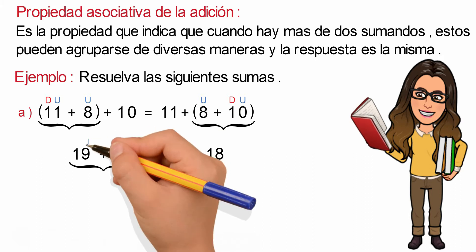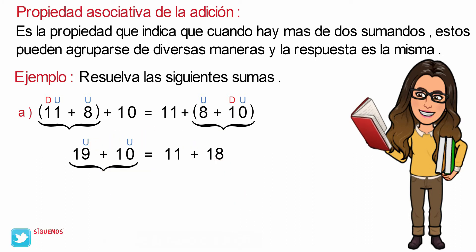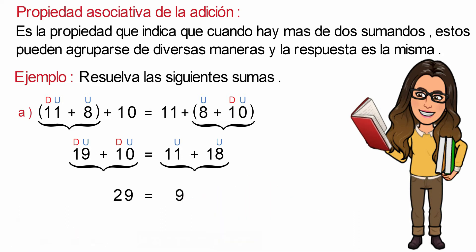Identificamos la cifra de la unidad en los números y sumamos: 9 más 0 es igual a 9. E identificamos la cifra de la decena en los números y sumamos: 1 más 1 es igual a 2, y nos quedaría 29. Y esto va a ser igual: identificamos la cifra de la unidad y sumamos, 1 más 8 es igual a 9. E identificamos la cifra de la decena y sumamos: 1 más 1 es igual a 2, y nos quedaría también 29.